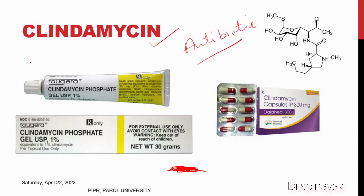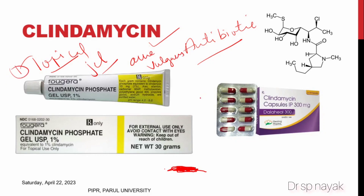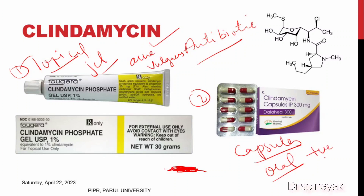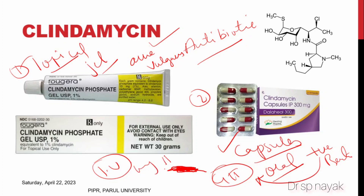Clindamycin has three formulations. First, it is available as a topical gel, which is mainly used for acne vulgaris. Second, it is available as capsules through the oral route, used for many systemic infections, particularly gram-positive bacterial and GI tract-related infections. Third, it is available in IV injection form, used through deep IM route and IV infusion.